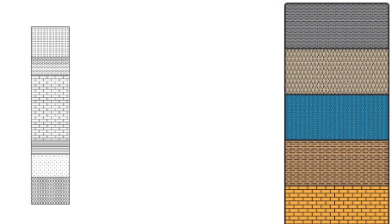One common method is lithostratigraphic correlation, which focuses on comparing the lithology, rock type, and sedimentary characteristics of different rock units. Matching similar rock types, sedimentary structures, and fossil assemblages can indicate a correlation between strata.